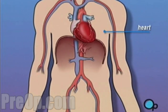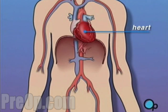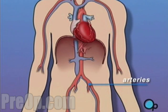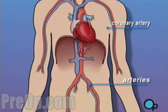The heart is located in the center of the chest. Its job is to keep blood continually circulating throughout the body. The blood vessels that supply the body with oxygen-rich blood are called arteries. The arteries that supply blood to the heart muscle itself are called coronary arteries.